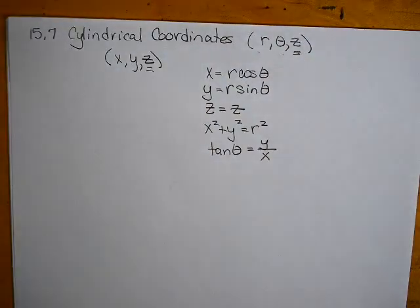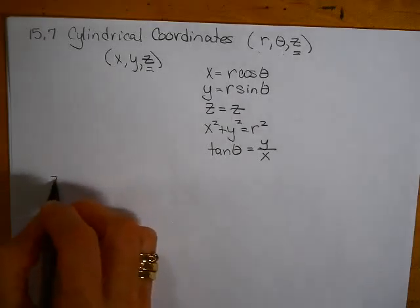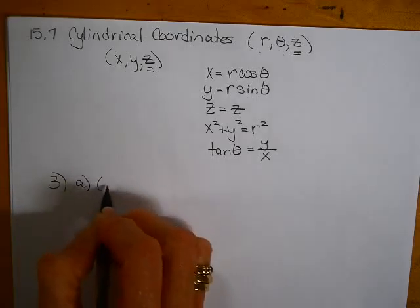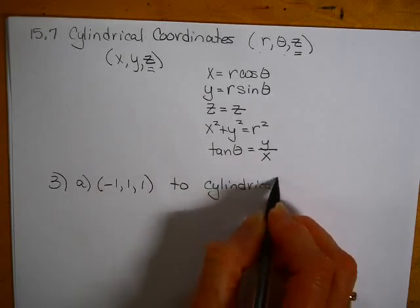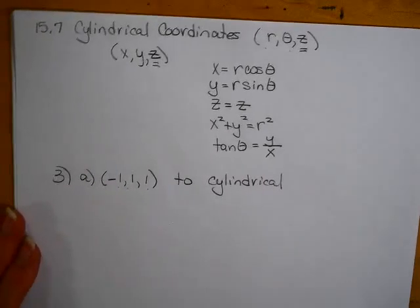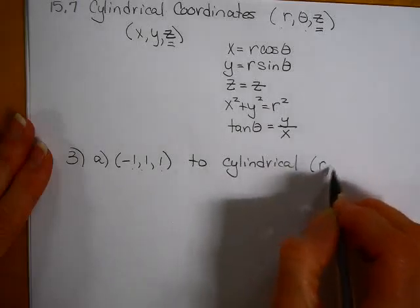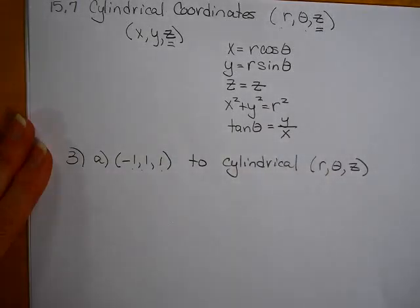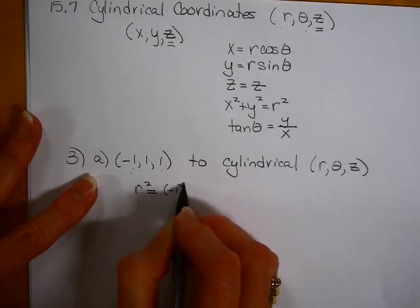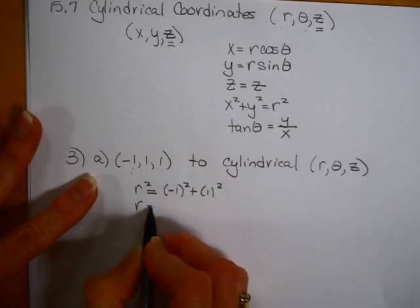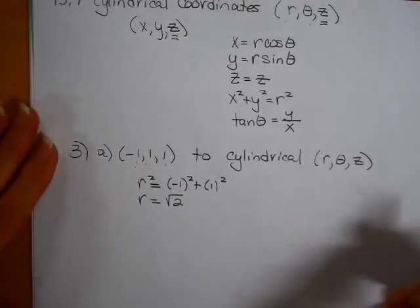You're rotating your angle theta, and you're coming out r, and then you're going up z to get that third dimension in there. If you have to change from rectangular (-1, 1, 1) to cylindrical, this is x, this is y, this is z. Which means you're trying to go to an r, a theta, and a z. You're going to have to find r. r squared is going to be (-1)² + 1². r is going to be square root of 2. I like to keep r positive.